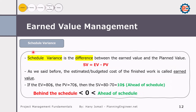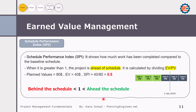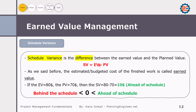Schedule Variance is the difference between earned value and planned value. If you want to know the schedule variance in terms of money — how much we are delayed or ahead — you calculate earned value minus planned value. If the number is greater than zero, it is positive and means we are ahead of schedule. If it is negative, we are behind schedule.